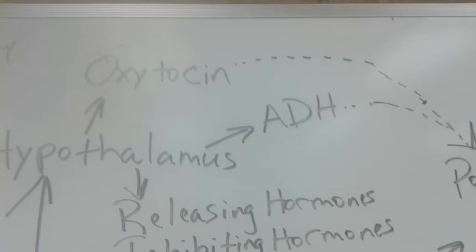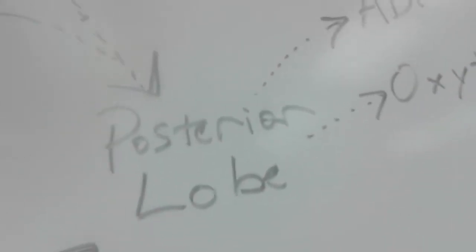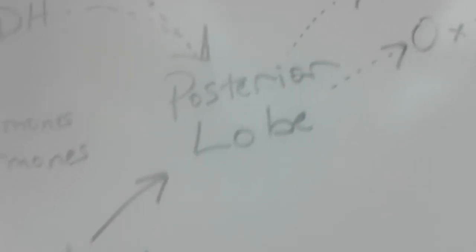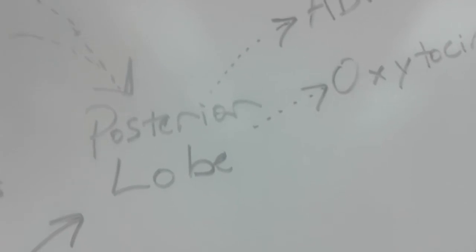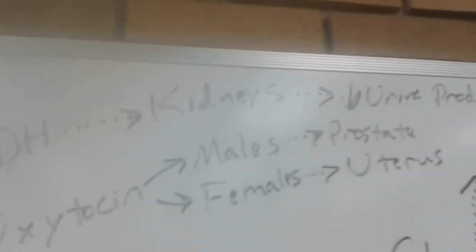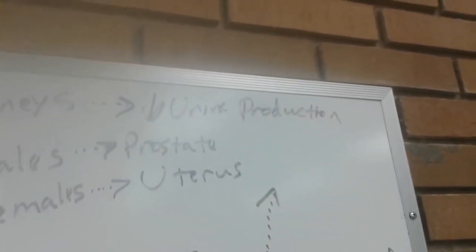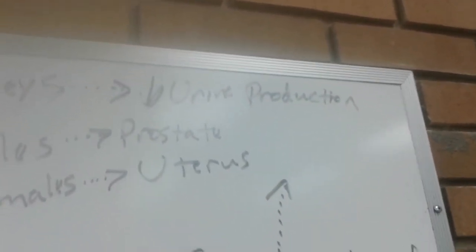Then those chemicals oxytocin and ADH are then sent and stored in the posterior lobe of the pituitary gland. The posterior lobe then releases these hormones when needed. We have ADH which targets the kidneys and the kidneys then in turn decrease urine production.